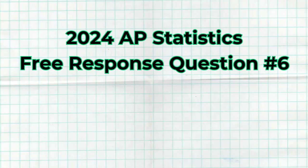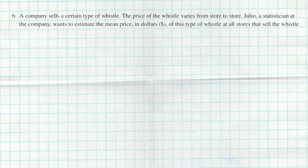What's up my StatsArts, in this video I'm going to walk through the 2024 AP Statistics free response question number 6. It is a very long question, but I think a really easy question that I hope you did well, and I hope going through this video it's going to prove that you actually did well on it. The question starts with this: A company sells a certain type of whistle, the price of the whistle varies from store to store. Julio is a statistician at the company who wants to estimate the mean price in dollars of this type of whistle at all stores that sell the whistle.